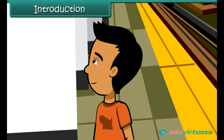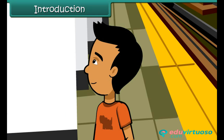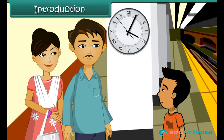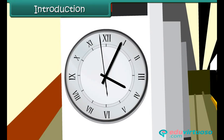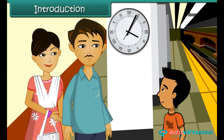But he is unable to read the clock as all the numbers are written using Roman numerals. Seeing Abhishek grow restless, his father decides to teach him the Roman numerals and their usage. Let us also learn to read and write numbers using Roman numerals.